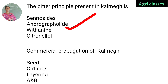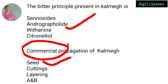Commercial propagation of Kalmegh — through seeds, cuttings, layering, or A and B? Although both seeds and cuttings are used, for commercial propagation only seeds are preferred. So the correct answer for commercial propagation is seeds, not both A and B.